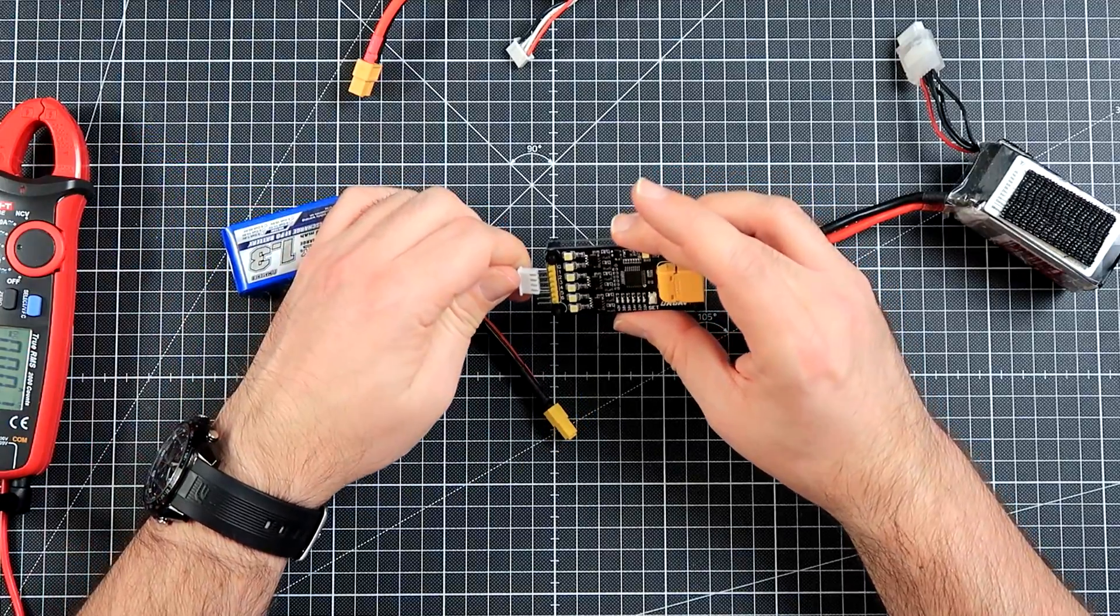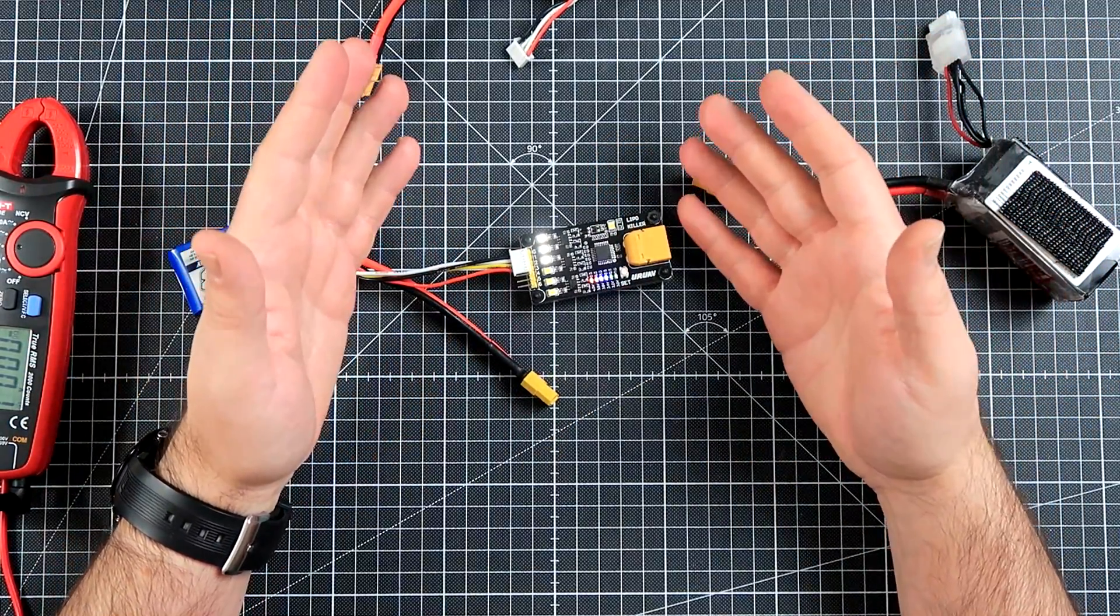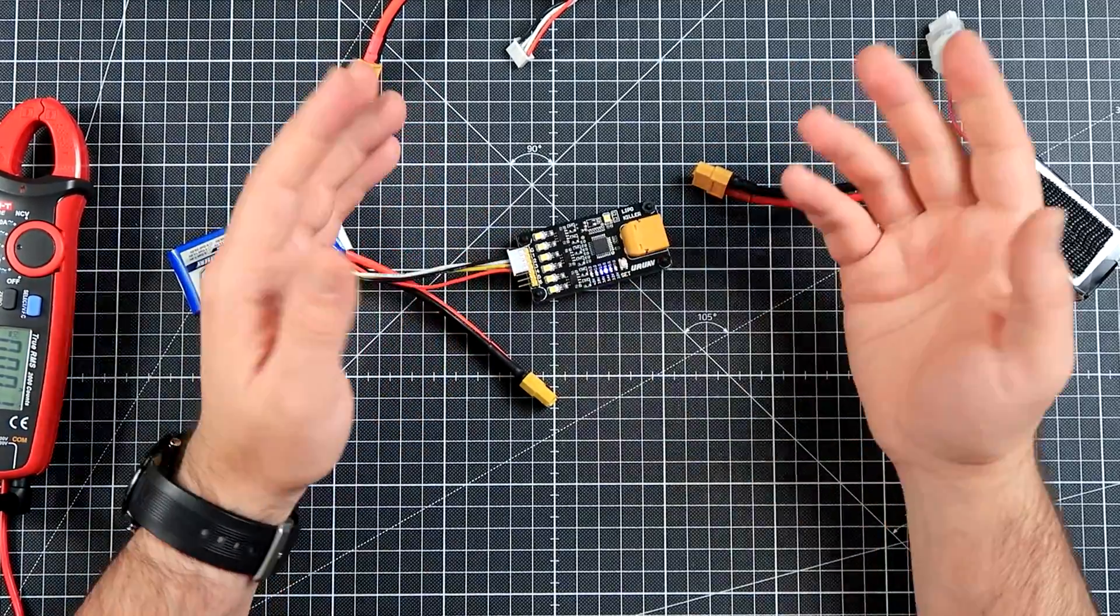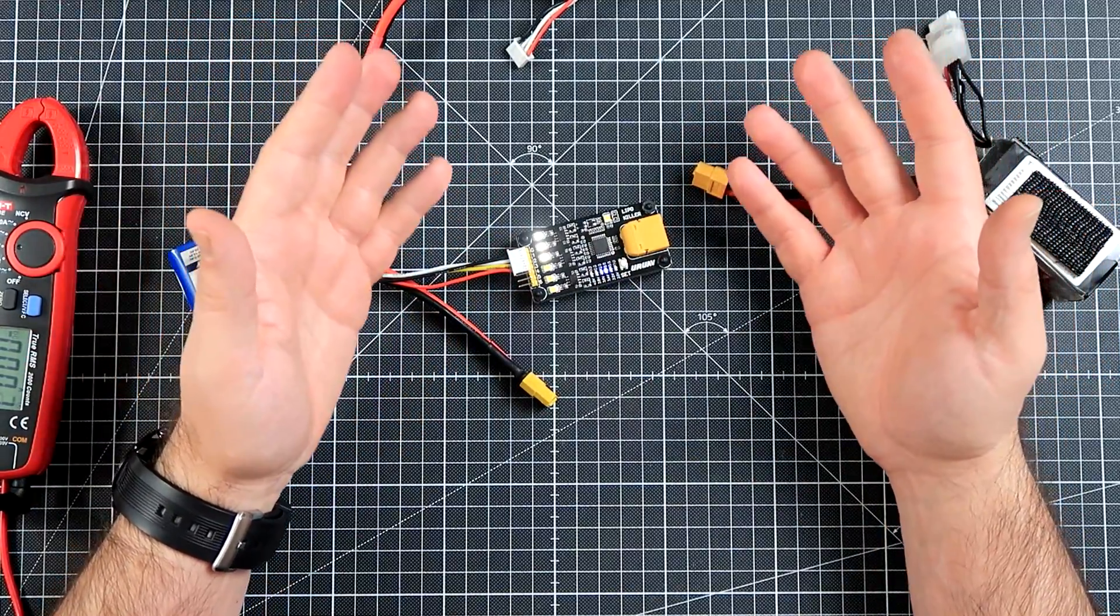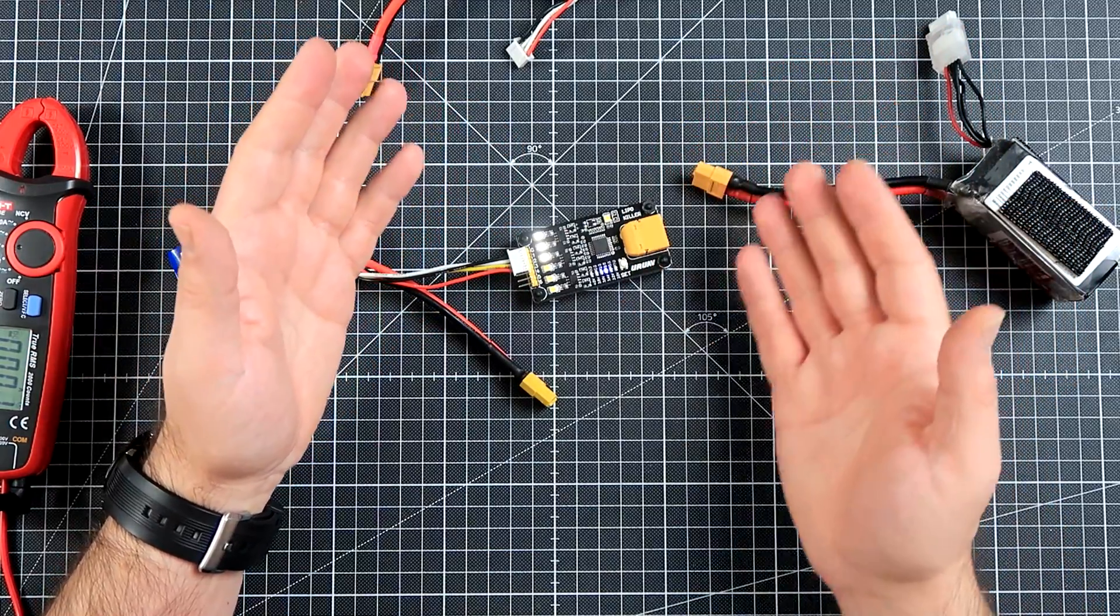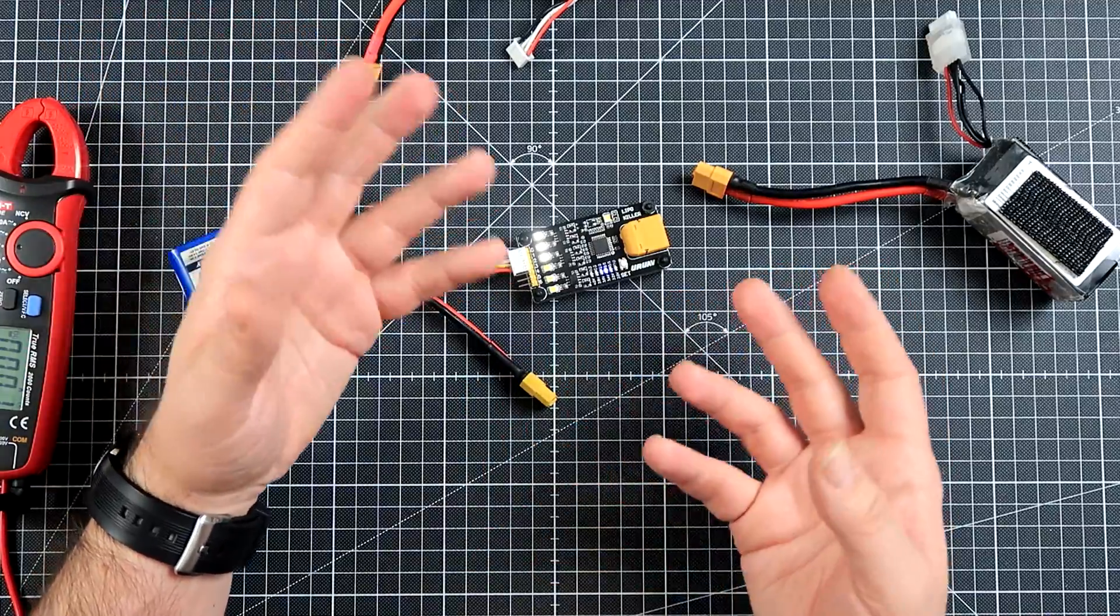Discharging to storage voltage with the charger's storage function will probably do it faster. On the other hand, why use the charger for storage when it's consuming a lot of power?